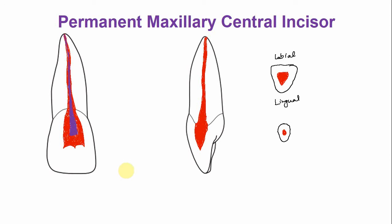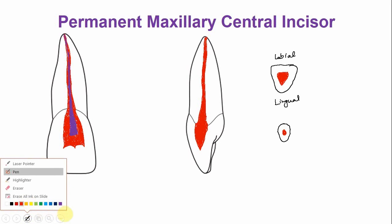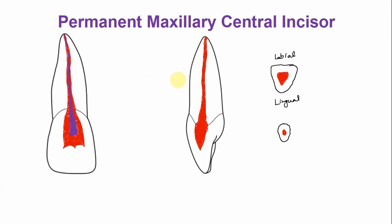In the labial-lingual section, similar age-related changes are observed — the pulp chamber and canal become smaller. At the cervical cross-section, the canal becomes more oval rather than triangular due to deposition of secondary dentine. Similarly, the apical area becomes more rounded with a smaller diameter.